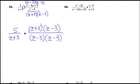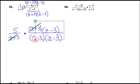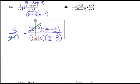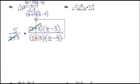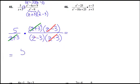I'm now ready to remove the common factors on the top and on the bottom. The z plus 3s — one on the top, one on the bottom — can be removed. And the z minus 3s can also be removed, top and bottom. Now I just write my answer as what's remaining: the 5 in the numerator over the z minus 3 in the denominator.